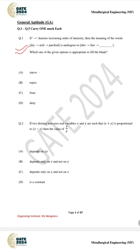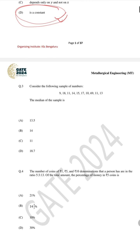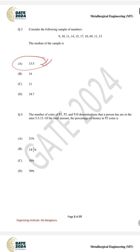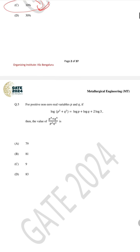For question number one the correct answer is A. For question number two the correct answer is D. For question number three, in which you have to determine the median of the sample, the correct answer is A, 13.5. For question number four the correct answer is 10 percent, which is C. For question number five the correct answer is 79.